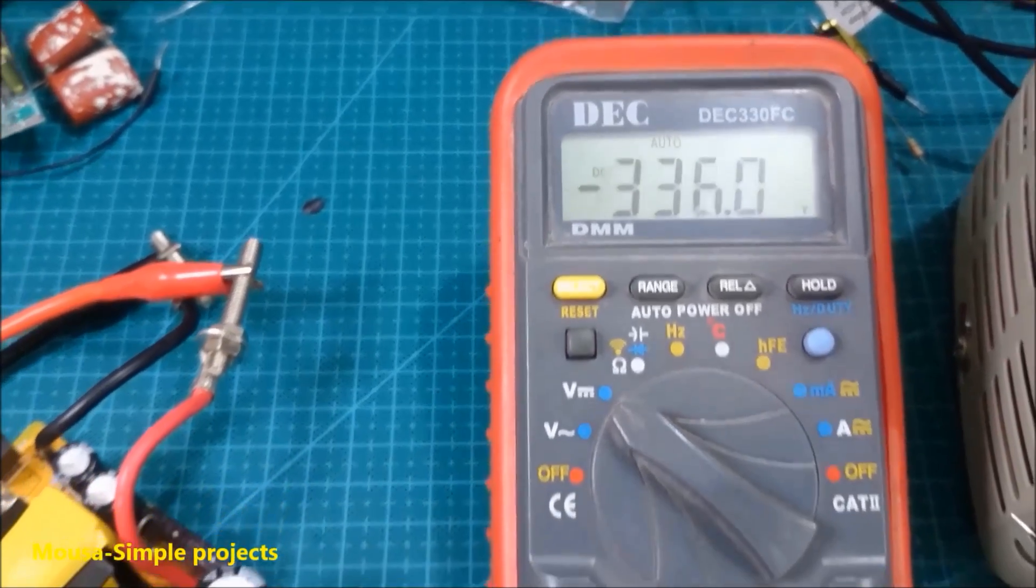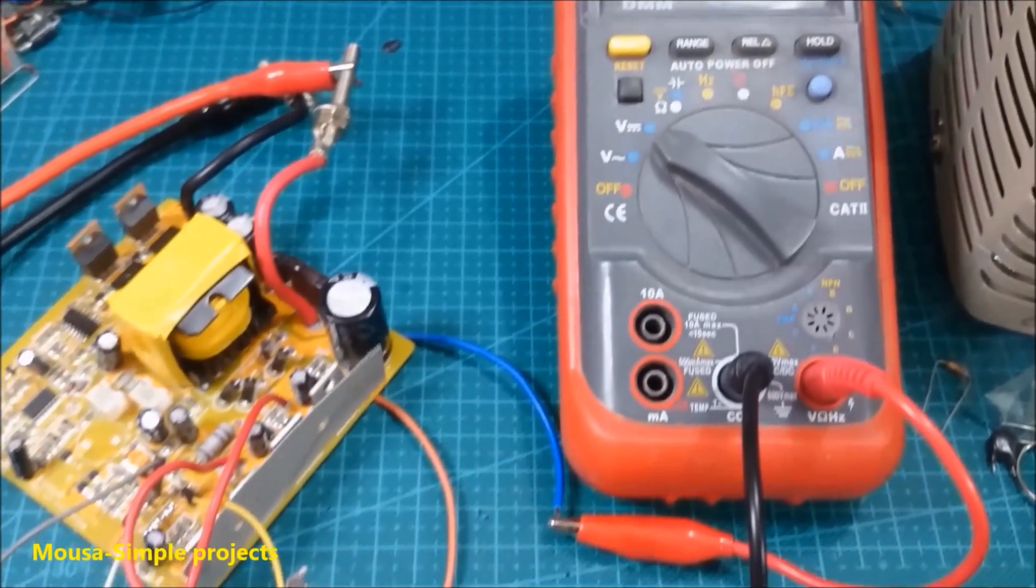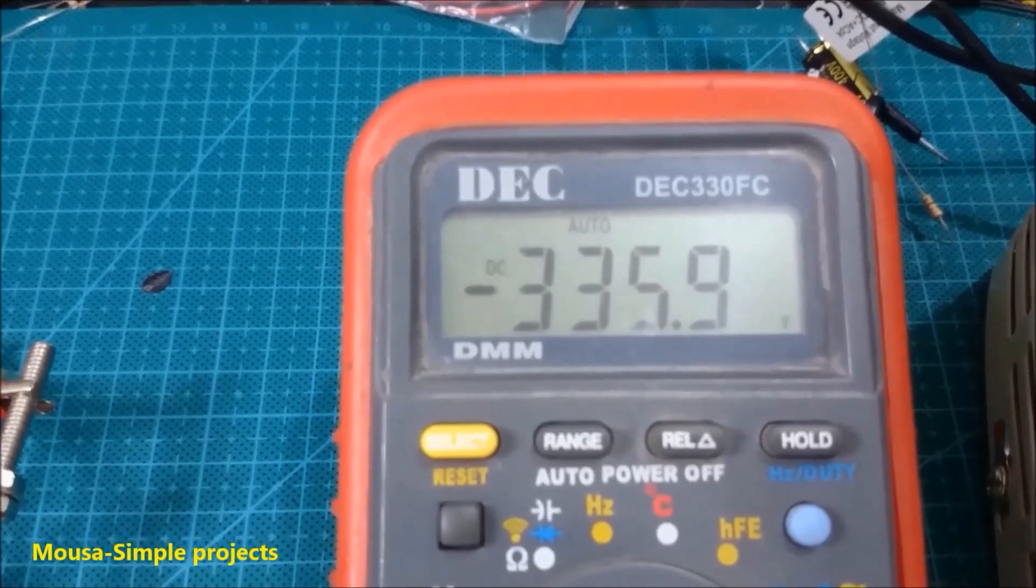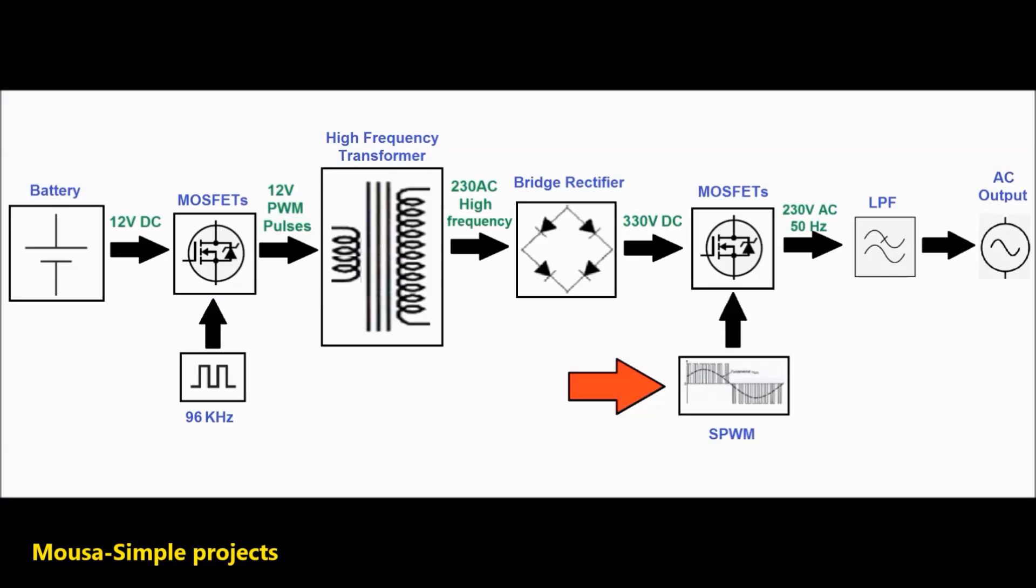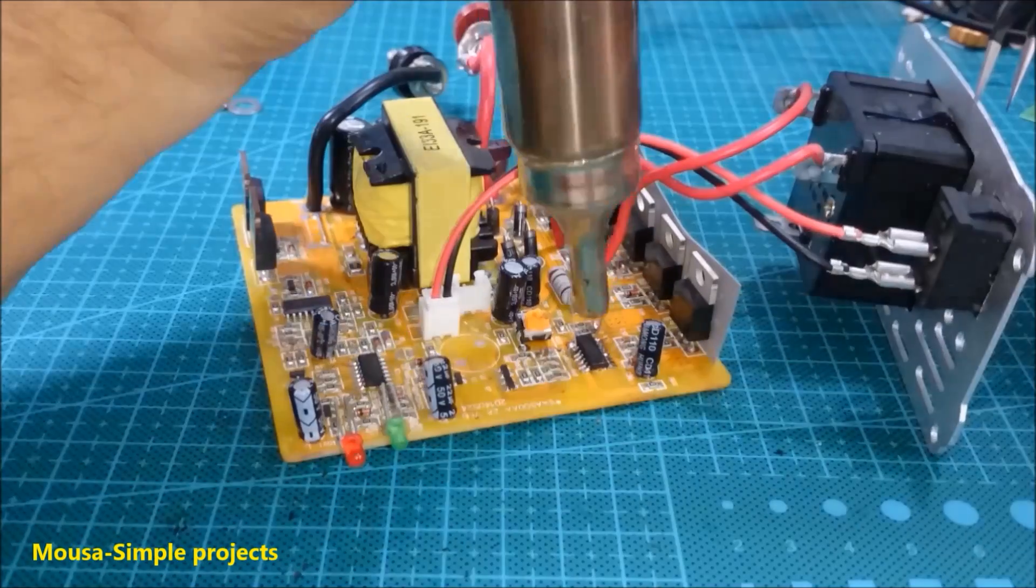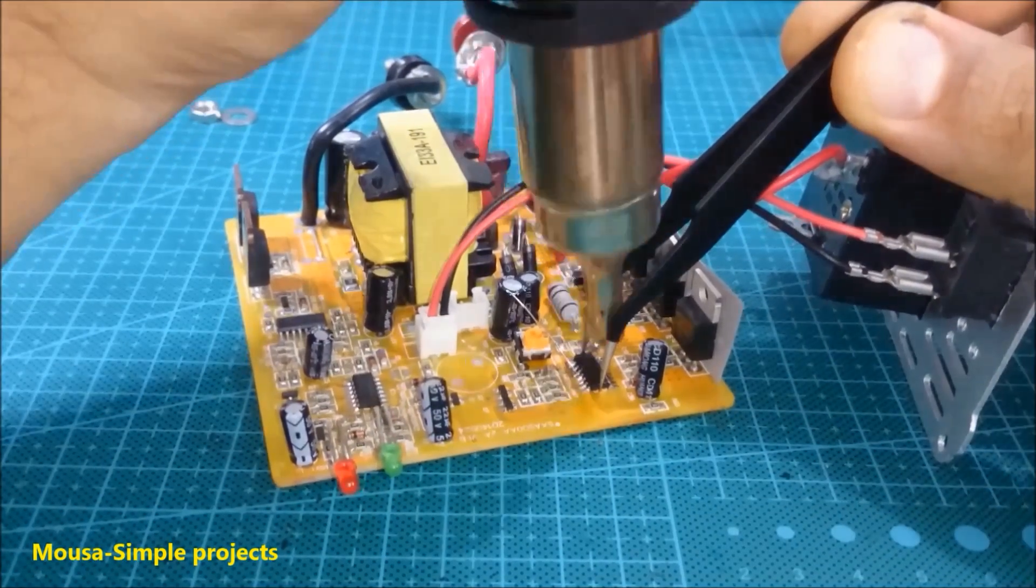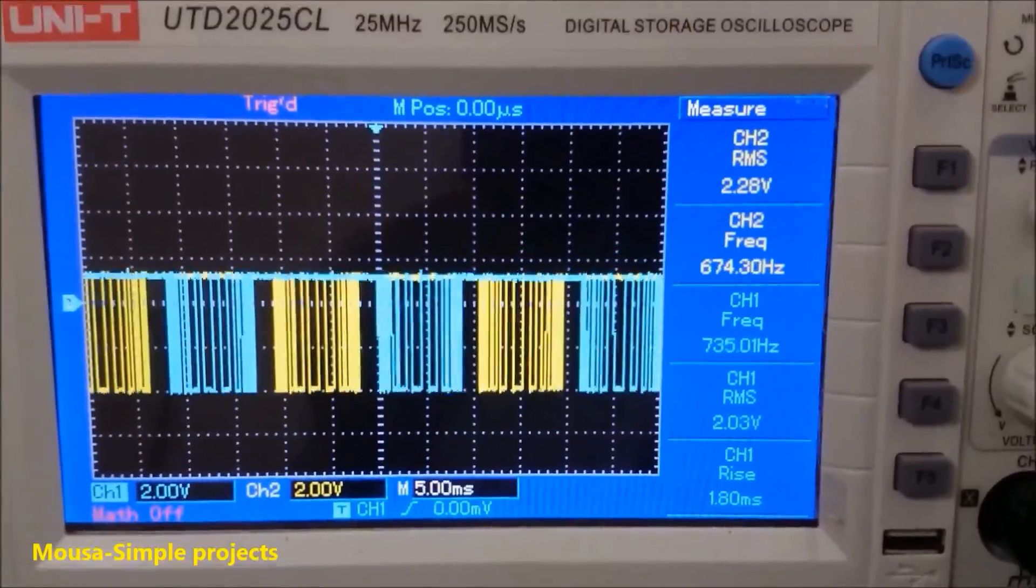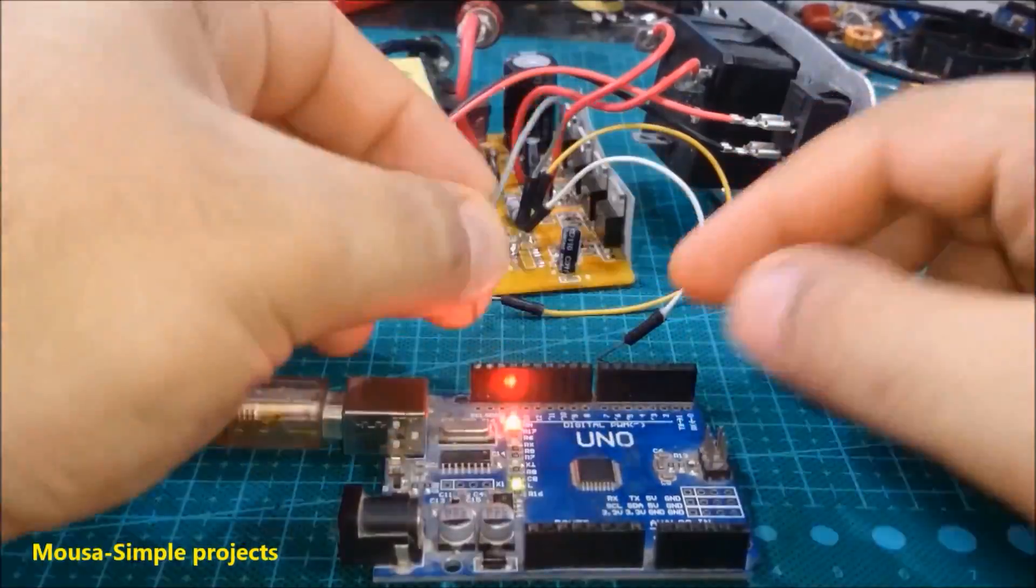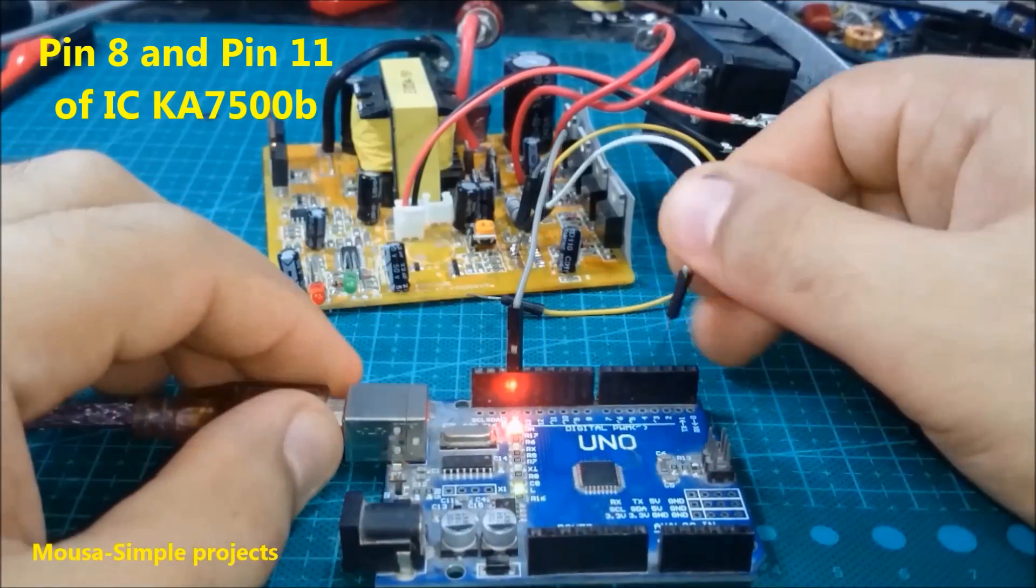The next step is feeding SPWM signal to the MOSFETs gates. I removed the IC from the board and connected to SPWM signals comes from Arduino board in place of pin number eight and pin number ten of the IC.